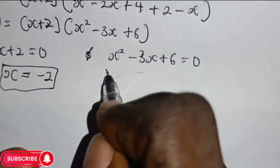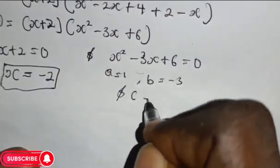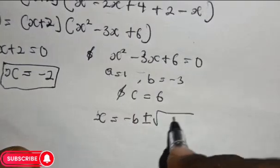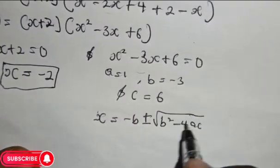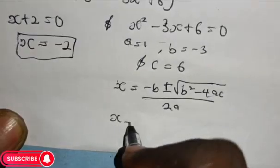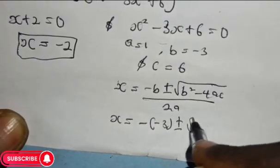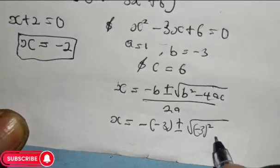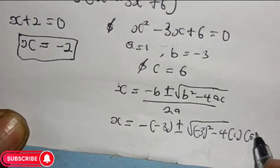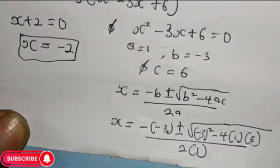Using the quadratic formula method, we have a equals 1, b equals minus 3, and c equals 6. The formula says s equals minus b plus or minus root of b squared minus 4ac, divided by 2a. Substituting the parameters: x equals minus of minus 3, plus or minus root of minus 3 squared minus 4 multiplied by 1 multiplied by 6, divided by 2 multiplied by 1.